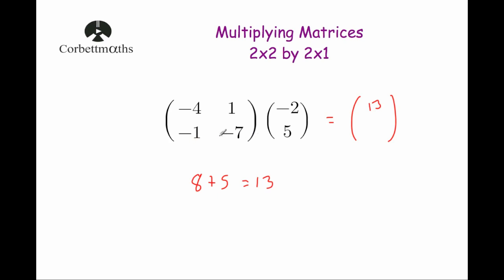And then we're going to do our second row times the column. So we're going to do minus 1 times minus 2, and minus 1 times minus 2 is 2, because negative times negative is a positive. And then we're going to add minus 7 times 5, and minus 7 times 5 is minus 35. When we add a negative, that's the same as taking away, so we're going to do 2 take away 35, and 2 take away 35 is minus 33. So the number beneath here would be minus 33.